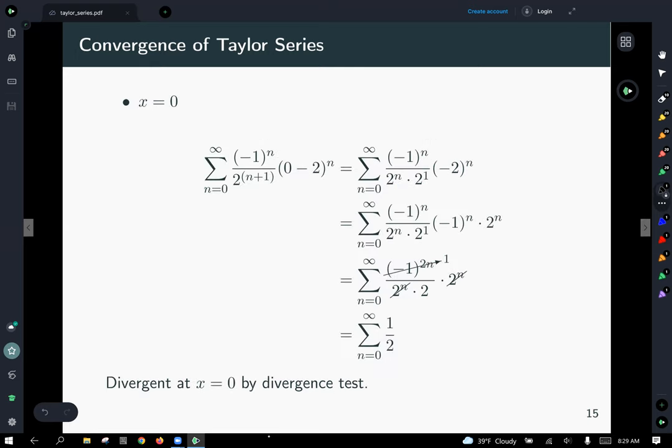So checking our first endpoint at x equals 0, we plug 0 into our series expansion, and we get that it becomes this expression on the right. I kind of broke up the denominator there. Next I separated negative 2 to the nth power as negative 1 to the n times 2 to the n, that way I can reduce away these in my next line.